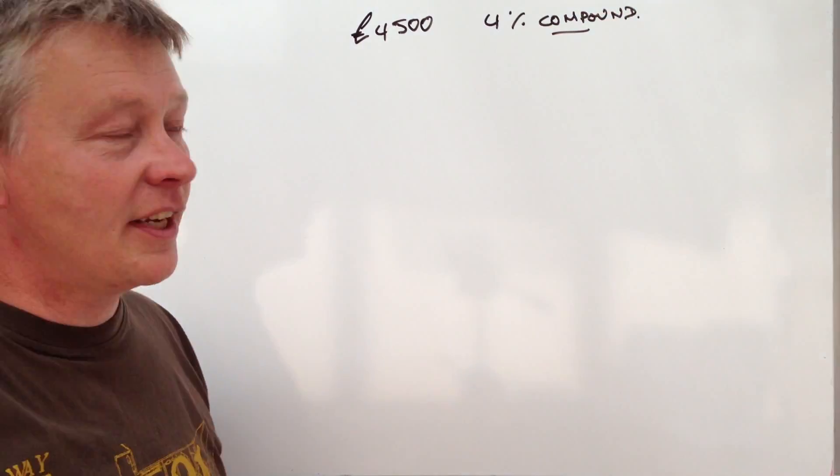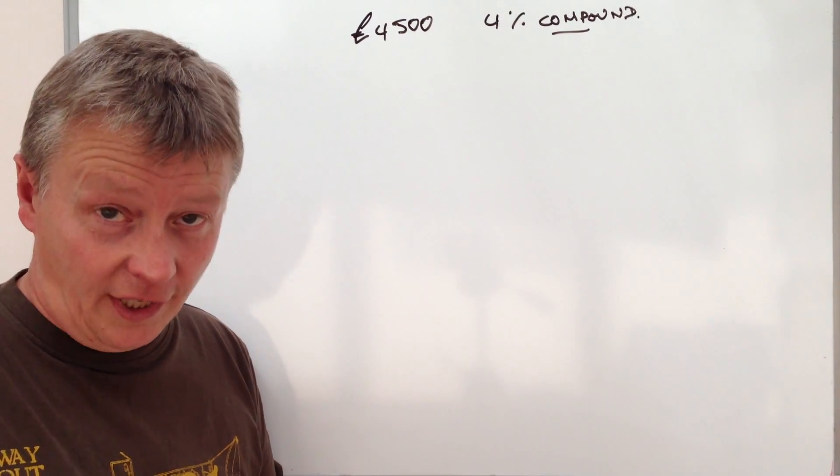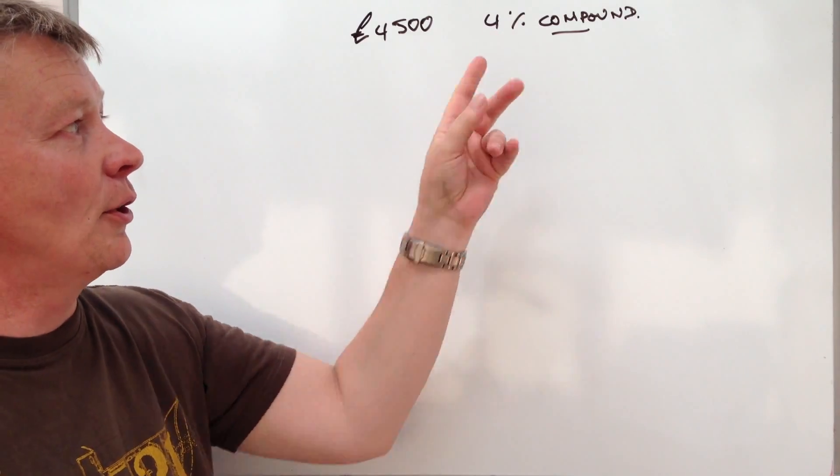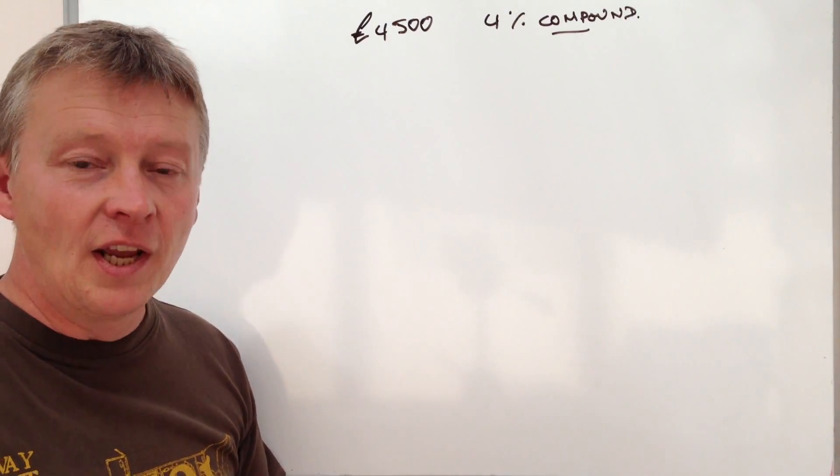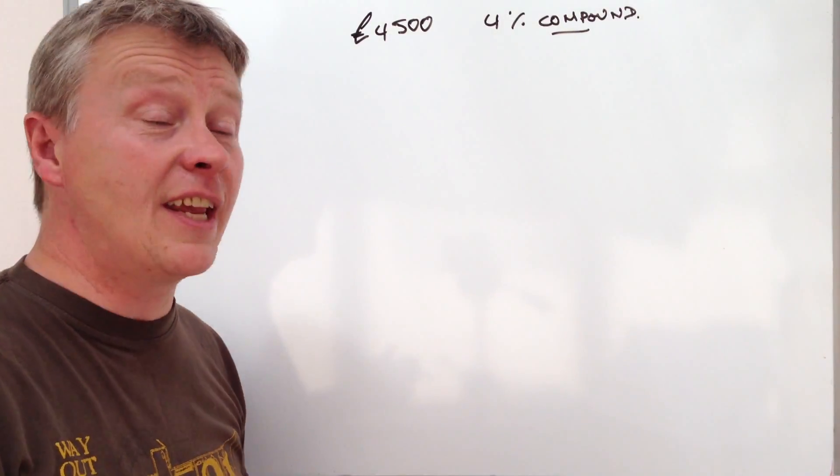Now the important thing about it is it's compound. There is a different type of interest which is called simple interest but in this particular example it's 4% compound per annum and the question asks for you to calculate how much money will be in the account at the end of three years.